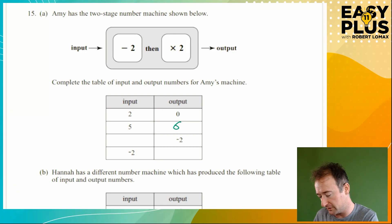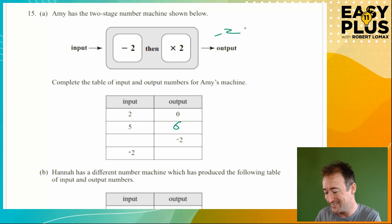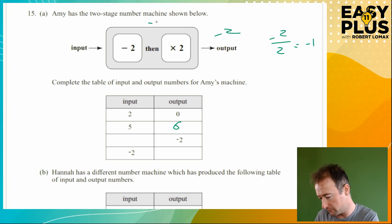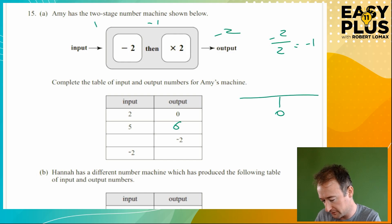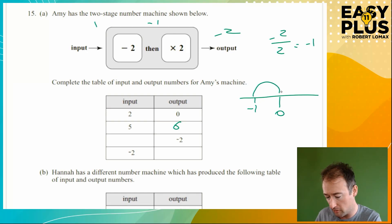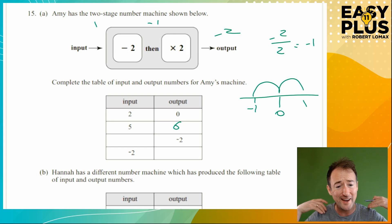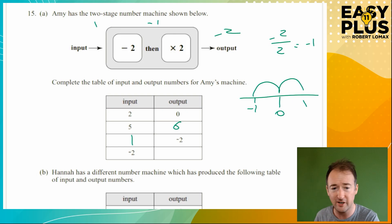Now we've got an output of minus 2. If it was times by 2 to give minus 2, we divide by 2 to reverse that: minus 2 divided by 2 equals minus 1. Then we reverse the subtract 2 by adding 2: minus 1 plus 2 is 1 — always think of the number line. So the input is 1. Let's check: 1 minus 2 is minus 1, times 2 is minus 2. Yes, that works.